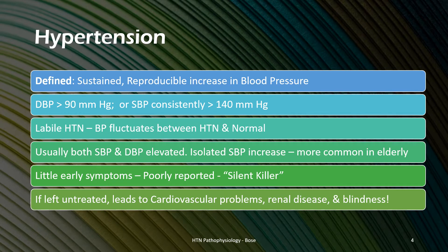Regardless, an accepted threshold for hypertension diagnosis is a sustained reading of diastolic blood pressure greater than 90 millimeters of mercury and a sustained systolic blood pressure greater than 140 millimeters of mercury, measured across several non-continuous days at the same time of day and in the same resting position.